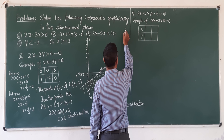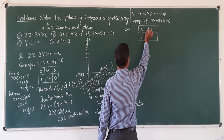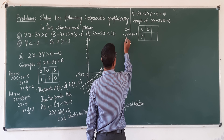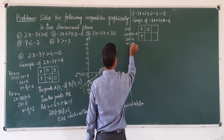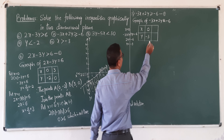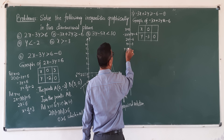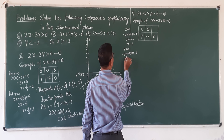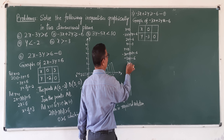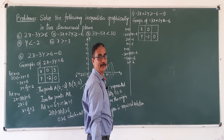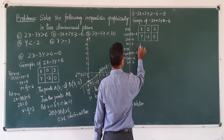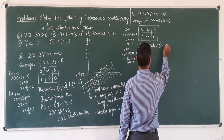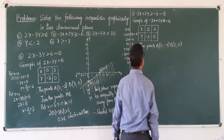First step, put x equal to 0: minus 3 into 0 plus 2y equals minus 6, so 2y equals minus 6, y equals minus 6 by 2, that is minus 3. Conversely, put y equal to 0: minus 3x plus 2 into 0 equals minus 6, minus 3x equals minus 6, x equals minus 6 by minus 3, that is 2. Therefore, point A is (0, minus 3) and point B is (2, 0).